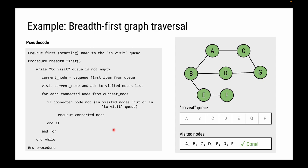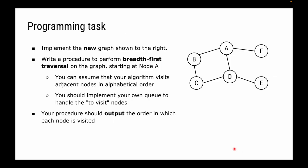Our graph is fully traversed, and the order of traversal was A, B, C, D, E, G, and F. Now try implementing a new graph shown on the right and write a breadth-first traversal from node A, outputting the order in which each node is visited.